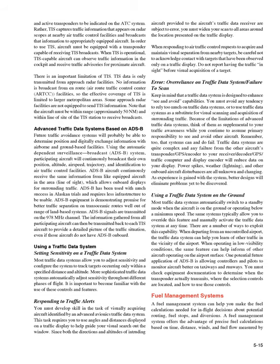Advanced traffic data systems based on ADS-B: future traffic avoidance systems will probably be able to determine position and digitally exchange information with airborne and ground-based facilities. Using the Automatic Dependent Surveillance-Broadcast, ADS-B system, participating aircraft will continuously broadcast their own position, altitude, airspeed, trajectory, and identification to air traffic control facilities. ADS-B aircraft continuously receive the same information from like-equipped aircraft in the area, which allows on-board displays for surrounding traffic. ADS-B has been used with much success in Alaskan trials and requires less infrastructure to be usable. ADS-B equipment is demonstrating promise for better traffic separation on transoceanic routes well out of range of land-based systems. ADS-B signals are transmitted on the 978 MHz channel. The information gathered from all participating aircraft can then be transmitted back to each TIS aircraft to provide a detailed picture of the traffic situation, even if those aircraft do not have ADS-B on board.